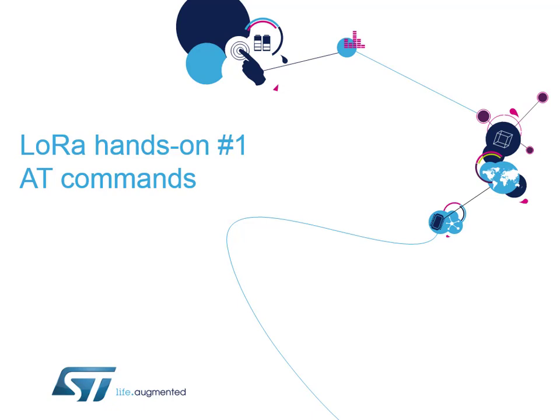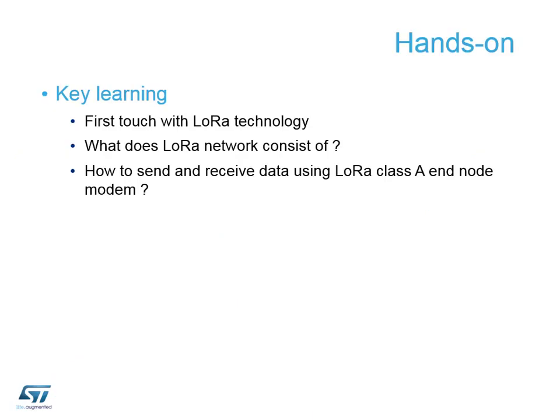We're going to start the first hands-on lab session now. This lab session is going to test our communications between our target board and our LoRa network. To do this, we're going to load into our target board a pre-compiled file which has an AT command set, so we're going to treat it literally as a modem to send information up to our LoRa network so that we can test all the connectivity.